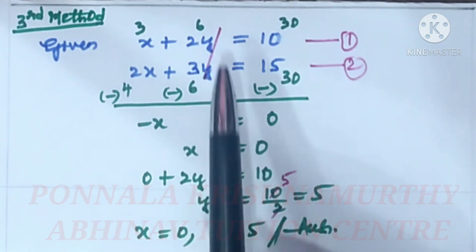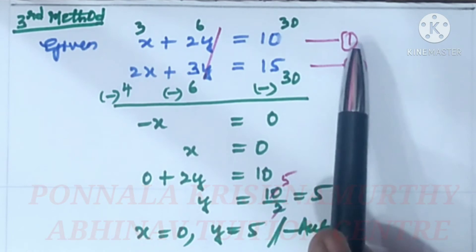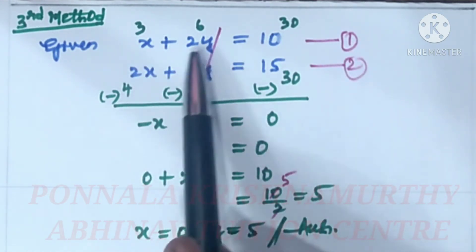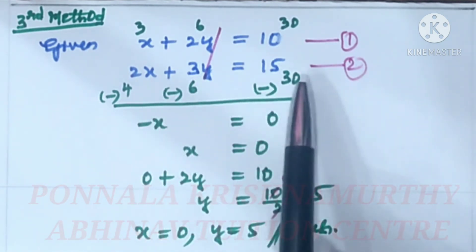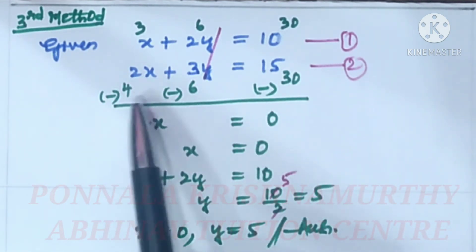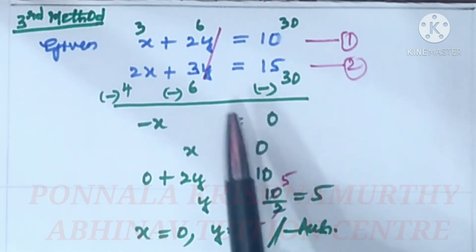We have to get 6 here and 6 here. To get 6 here, we multiply equation 1 by 3. 3x, 3 times 2 is 6y, 3 times 10 is 30. And we multiply this equation by 2. 2 times 2 is 4x and 2 times 3 is 6y and 2 times 15 is 30. Now these 2 are cancelled.